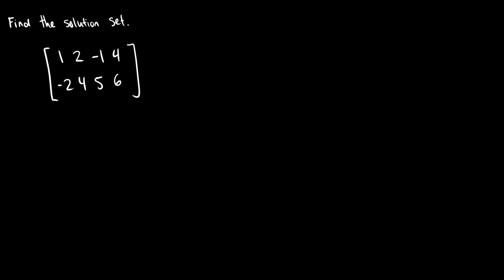So let's take row two, and we're going to take row two plus two of row one so we can get rid of that negative two there. So our first row is going to remain untouched, and we're going to add two of the first row. So negative two plus two is zero, four plus four is eight, five minus two is three, six plus eight is going to be 14.